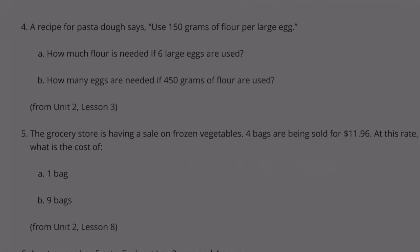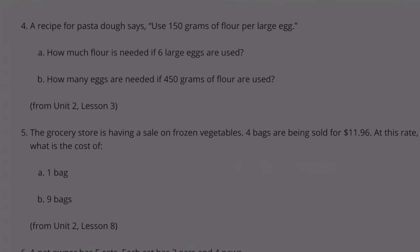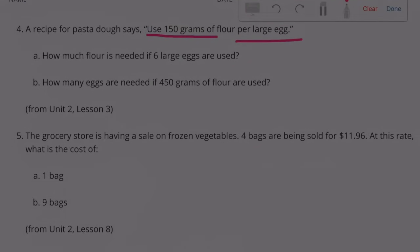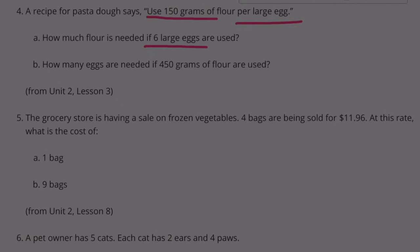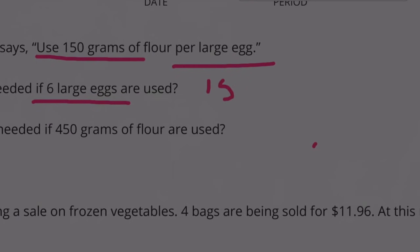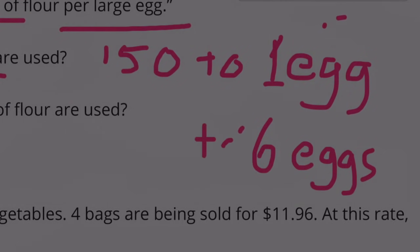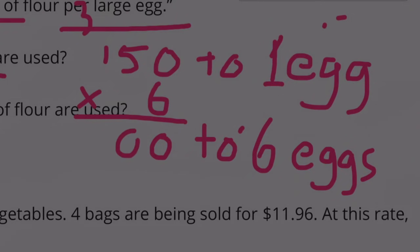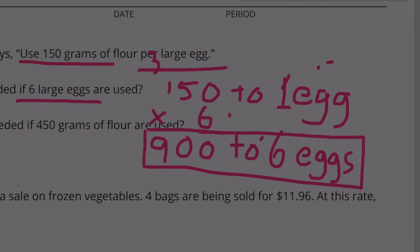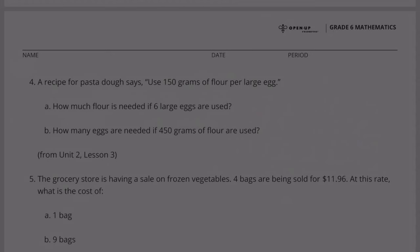Number 4: A recipe for pasta dough says use 150 grams of flour per large egg — so 1 egg to 150 grams of flour. Part A: How much flour is needed if 6 large eggs are used? If the ratio is 150 grams of flour to 1 egg, then 6 eggs is 6 times more. We need to multiply 150 times 6: 0 times 6 is 0, 5 times 6 is 30, 1 times 6 is 6 plus 3 is 9. So we need 900 grams of flour if we use 6 eggs.